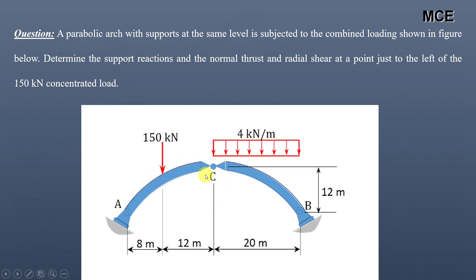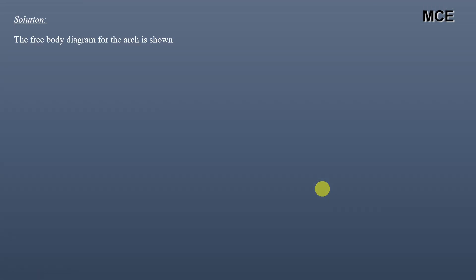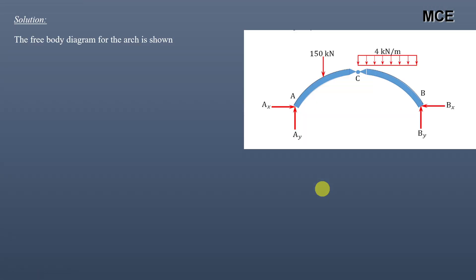You can see this is a parabolic three-hinged arch with a top hinge at point C. The total span of the arch is 40 meters. Two types of loading are acting on this arch: first is the concentrated load of 150 kN, and second is the uniformly distributed load of 4 kN/m. The rise of the arch at the center is 12 meters.